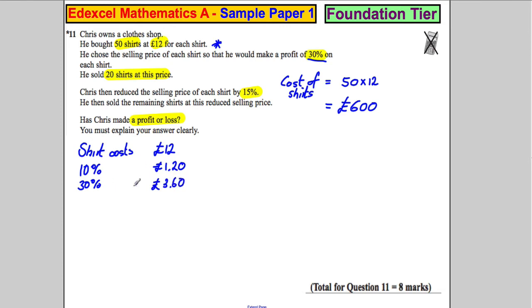So if he sold the shirts at 30% extra, his selling price was £12 plus £3.60, which is £15.60.